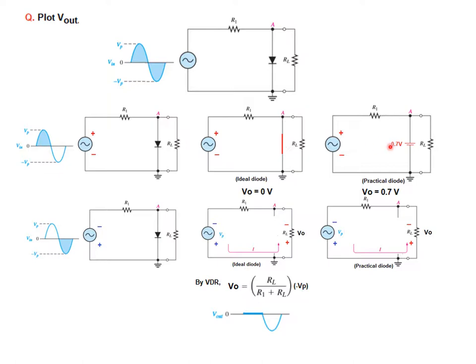For the practical diode same thing, same formula applies. The only difference in the plot will be that for the positive half cycle we have 0.7 volt, and the negative half will be same, a fraction of minus Vp by this ratio.